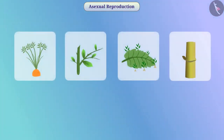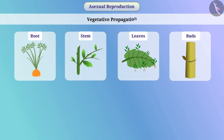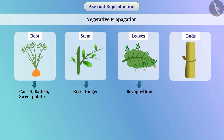In favourable circumstances, some plants can be grown from their parts like root, stem, leaves, or buds. This is called vegetative propagation. For example, carrot, radish, and sweet potato can be grown from the root of the plant. Rose and ginger can be grown from the stem. Bryophyllum can be produced from leaves, and sugarcane and various grasses can be produced from buds.